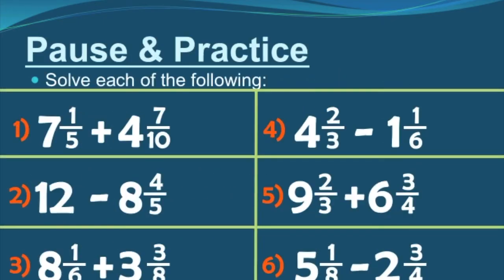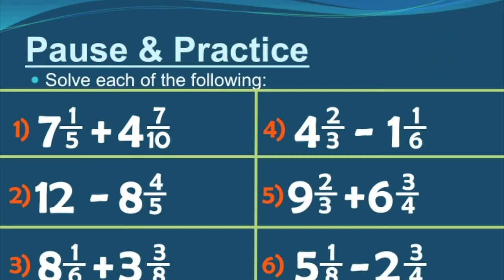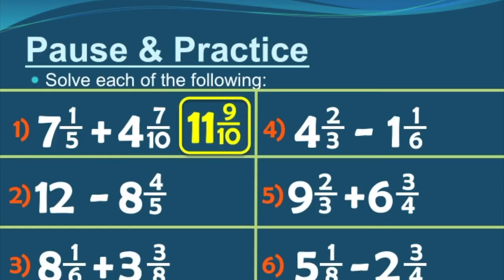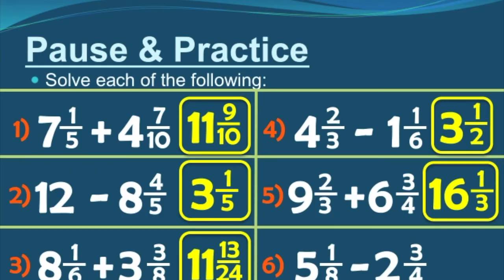Here's your pause and practice — pause and practice, then unpause the video. After a three-two-one countdown, your answers will be displayed. The answer for number one is eleven and nine tenths. Number two is three and one fifth. Number three is eleven and thirteen twenty-fourths. Number four is three and a half. Number five is sixteen and one third. And number six is two and three eighths.